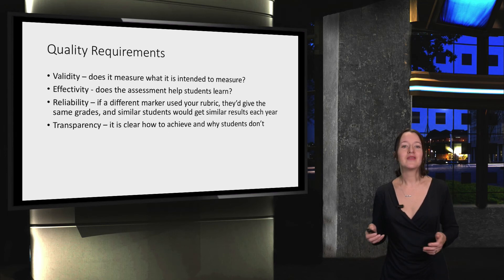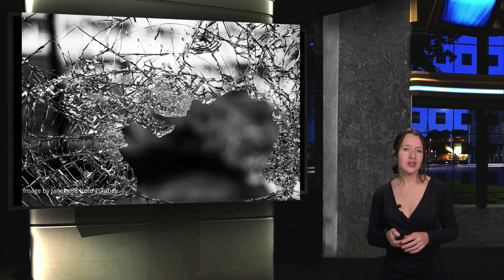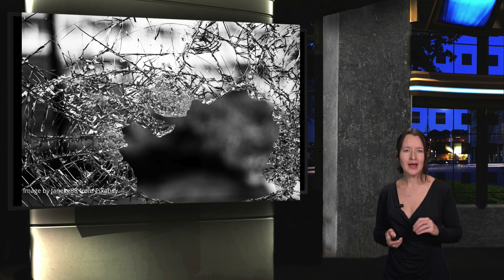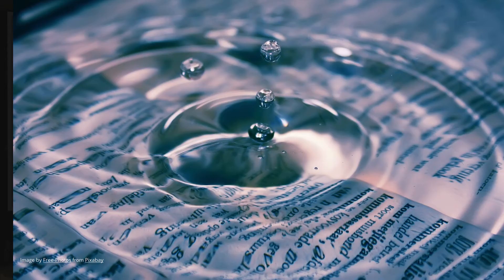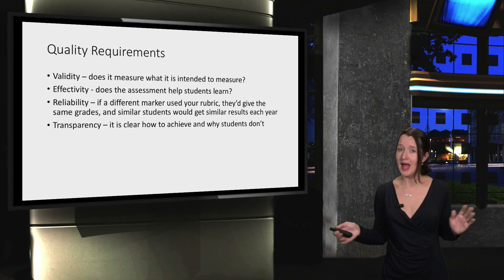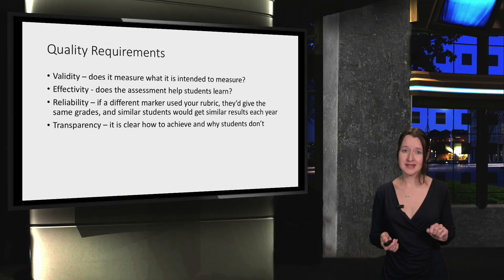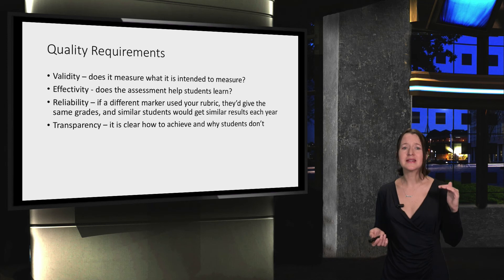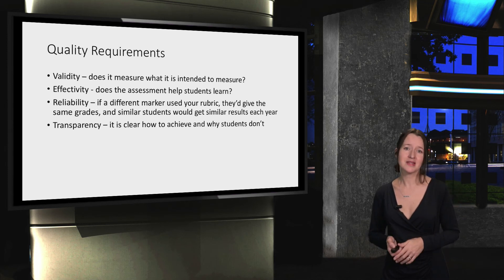Next, we have issues of transparency. Students should know how to get a good grade and why they get a low grade. This means that you are transparent about the grading criteria, grade weights, and about the assessment itself. There should be no tricks and no surprises. If you minus points, that should be explicitly stated within your syllabus.